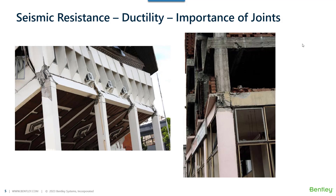In ductility itself there are two parts. One is the member itself becoming ductile — this is well known — where we provide closely spaced shear links so that the concrete core is fully confined and gains strength through confinement. The second part is joints. Joints are very critical.